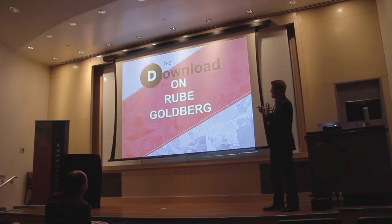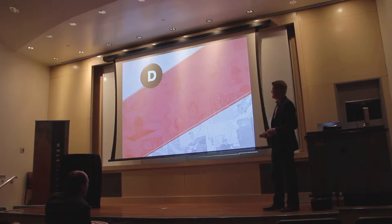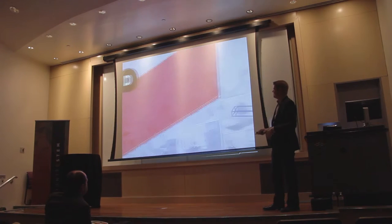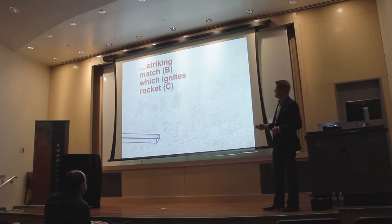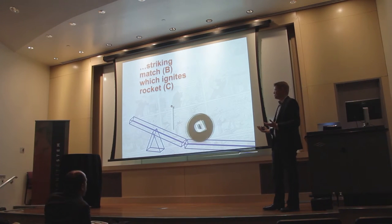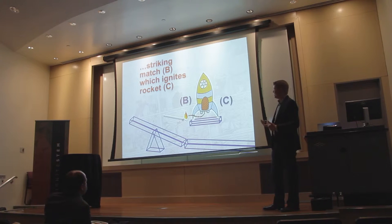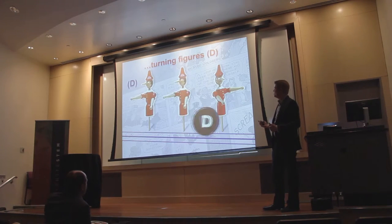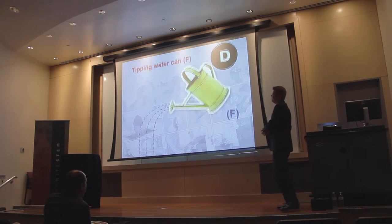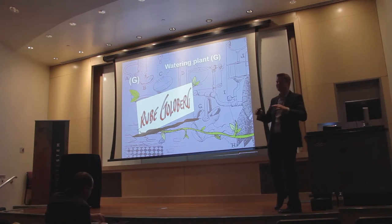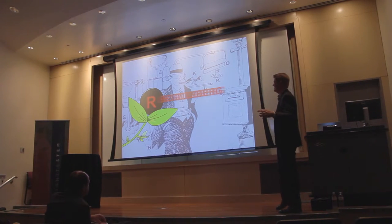This is kind of a summary of what Rube Goldberg represents and who he was in society. You start out with a ball rolling down a ramp, maybe striking a match, which then ignites a rocket, which then could turn figures, which then could turn an arrow, which then could tip a water container, which eventually waters a plant.